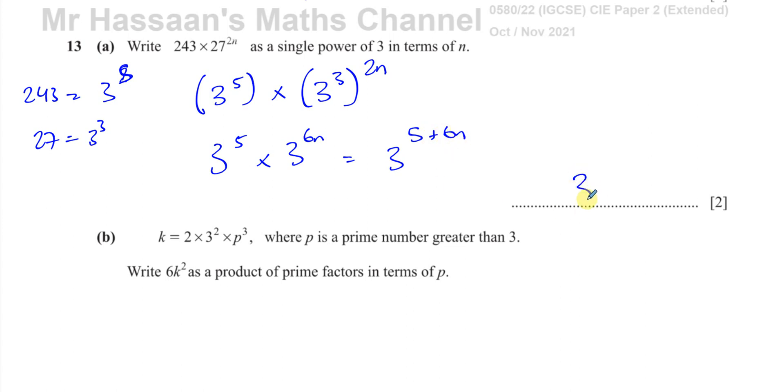So there's the answer. 3 to the power of 5 plus 6n. That's as a single power of 3 in terms of n. That's as simple as that, part a.